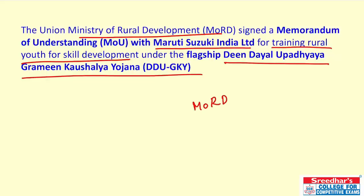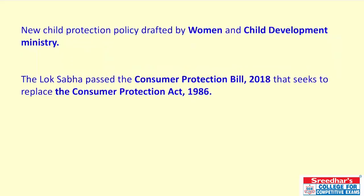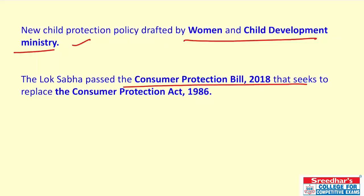The Union Minister of Rural Development has signed an MoU with Maruti Suzuki India Limited for training rural youth for skill development under the flagship Deen Dayal Upadhyaya Grameen Kaushalya Yojana. A National Child Protection Policy has been drafted by the Women and Child Development Ministry.